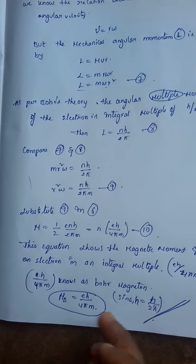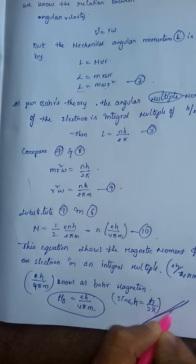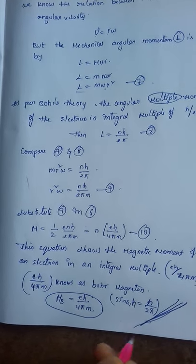Since h bar equals to h by 2π, μb equals to E h by 4π M, which can be written as E h bar by 2M. This E h bar by 2M represents the Bohr magneton for an electron.